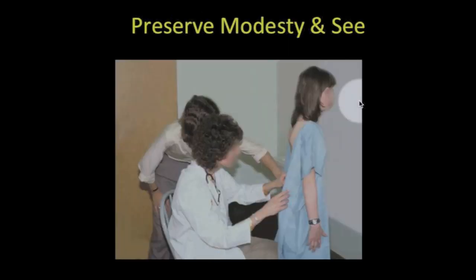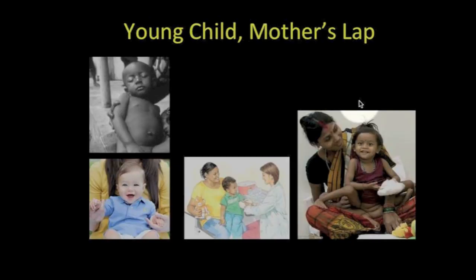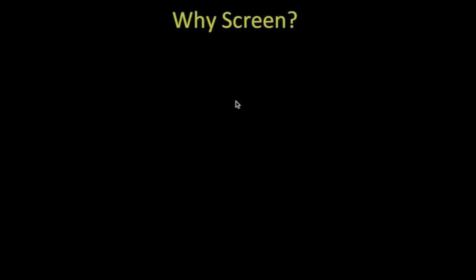The first step is to see as much as possible of the child while still preserving the modesty of the child, particularly adolescents or girls. For the young child or the infant, it's nice to examine the child on the mother's lap. Sometimes you can do quite a complete examination, in whichever culture it is. Infants are happier when they're on the mother's lap rather than on an examination table.